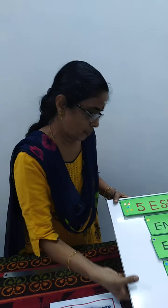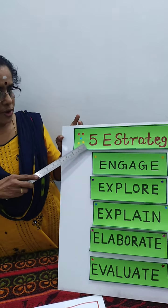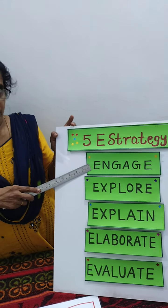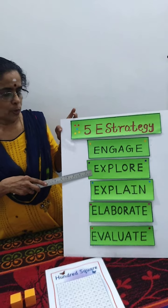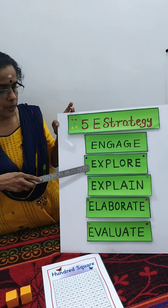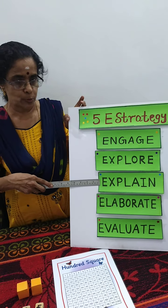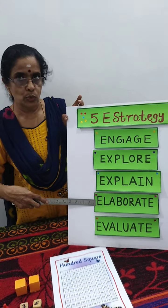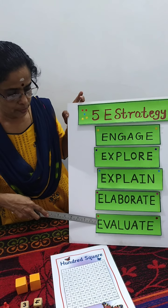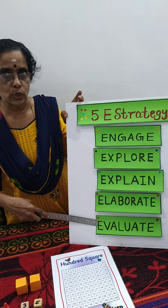What is 5E Strategy? The first E is Engage — play a game. The second E is Explore — the child will explore. The third E is Explain — the child, parent, or friend will explain. The fourth E is Elaborate — elaborate with new ideas differently. The fifth E is Evaluate — finally, evaluate learning new facts.